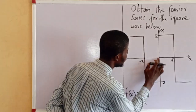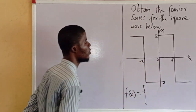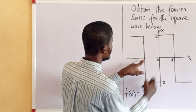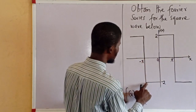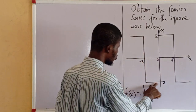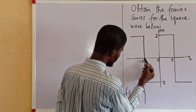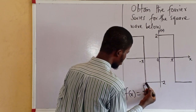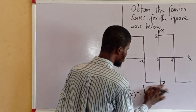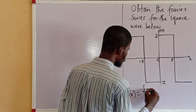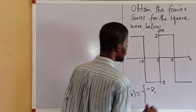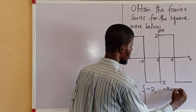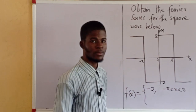From minus pi to 0, what is f of x? From minus pi to 0, f of x is minus 2. So f of x is equal to minus 2 when minus pi is less than x and x is less than 0.